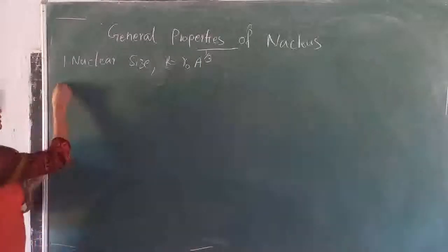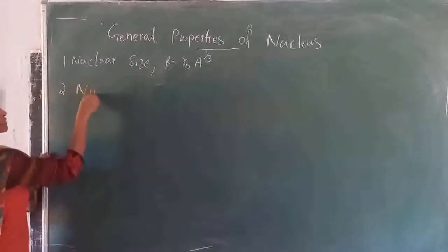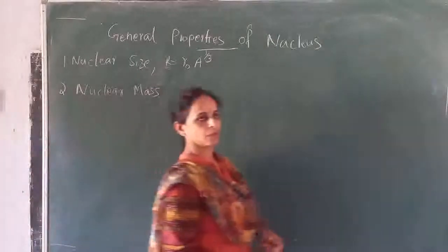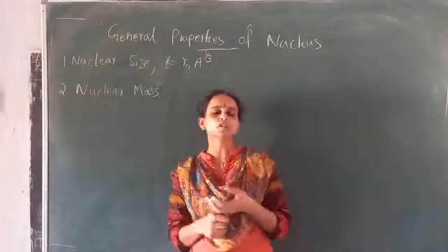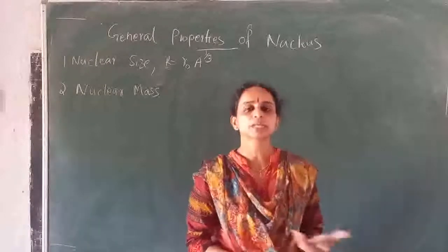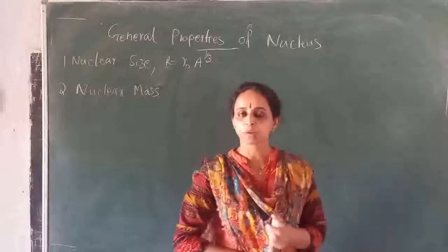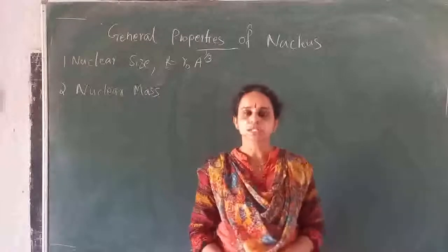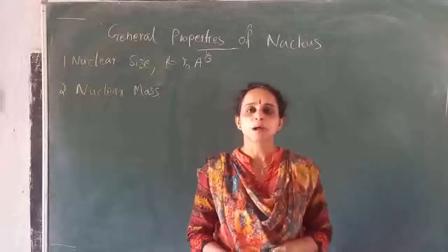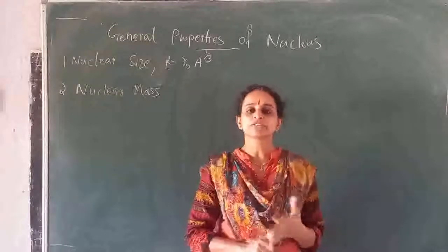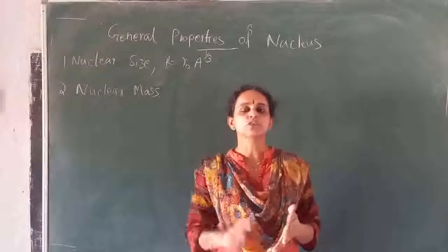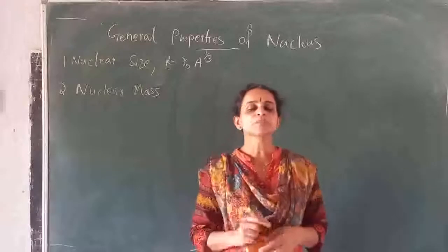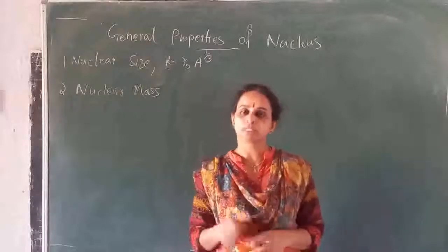The second property is the nuclear mass. The mass of the nucleus is given by the mass of protons and the mass of neutrons. So the mass of the nucleus should be mass of protons plus mass of neutrons. If there are Z protons, then Z times the mass of one proton, plus if there are N neutrons, then N times the mass of one neutron will give the total mass.